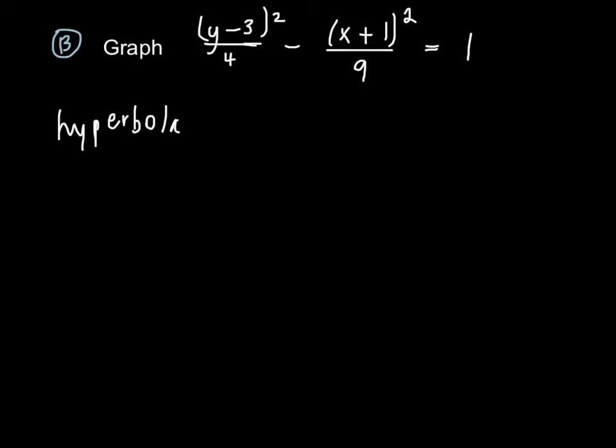Let's next identify our h, k value, which is negative 1, 3. Next, we have our a and b values. Our b value is b squared equals 9, therefore b equals 3. For our a value, a squared equals 4, so a equals 2.